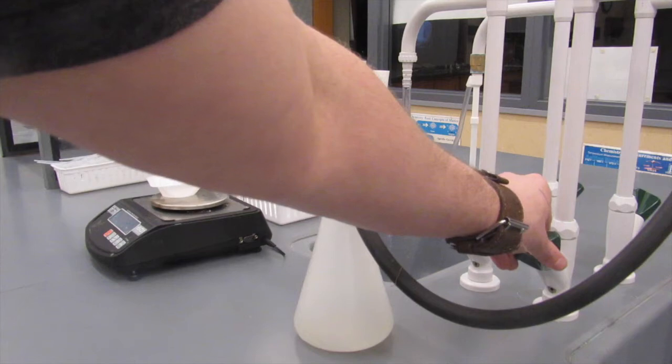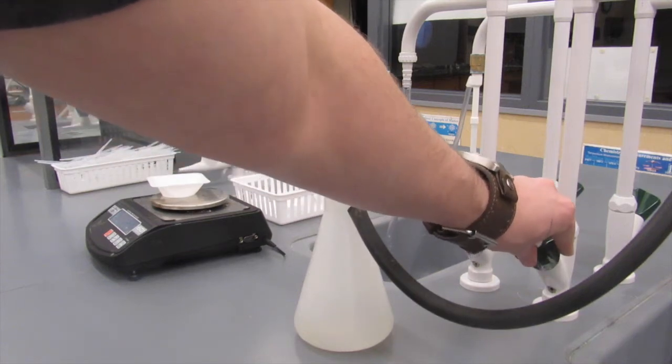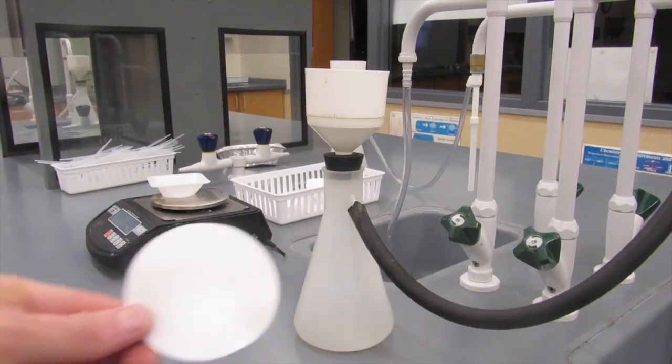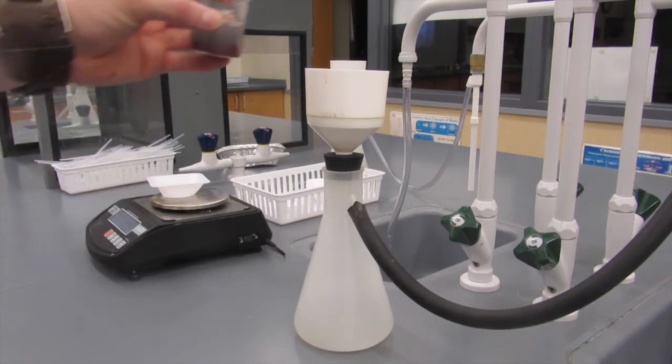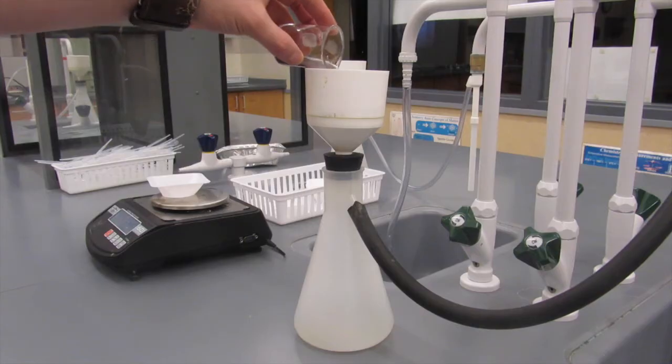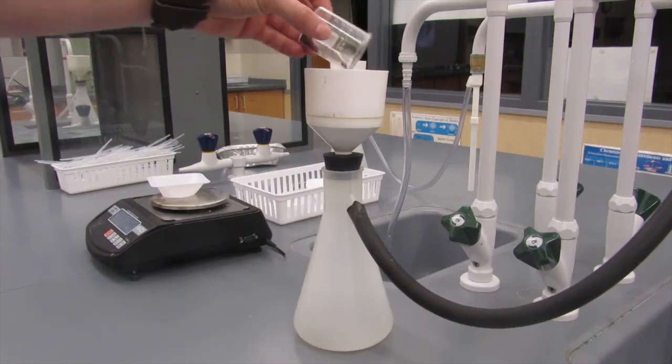A vacuum filtration is used to separate the copper out from the rest of the solution. When you turn the water on, the aspirator creates a vacuum inside of our vacuum flask, and a filter paper is placed on the inside. It's usually a good idea to weigh the filter paper before doing the filtration.